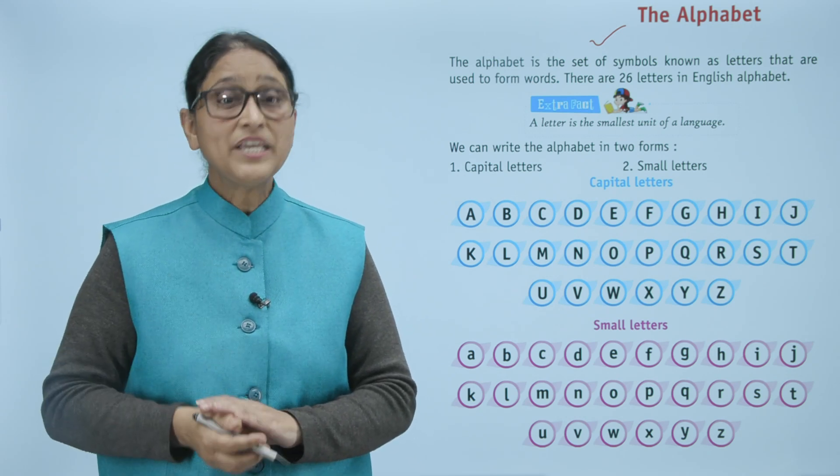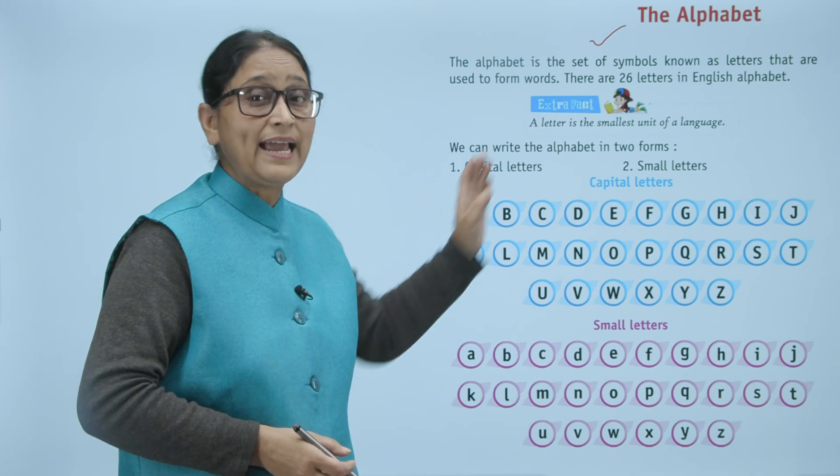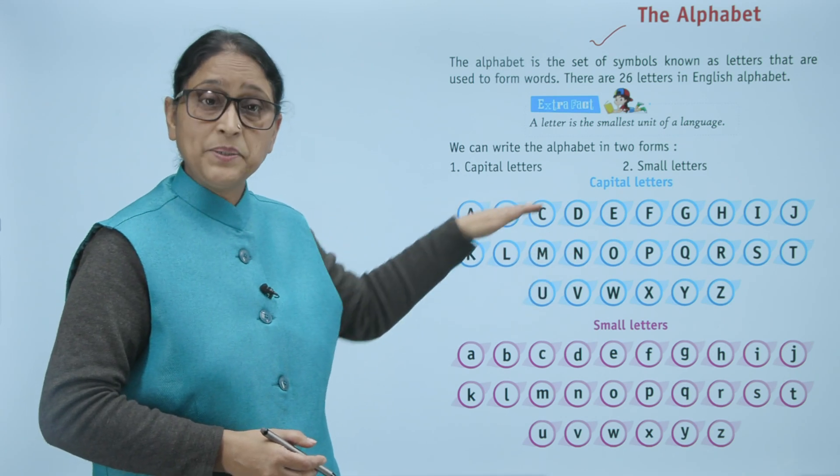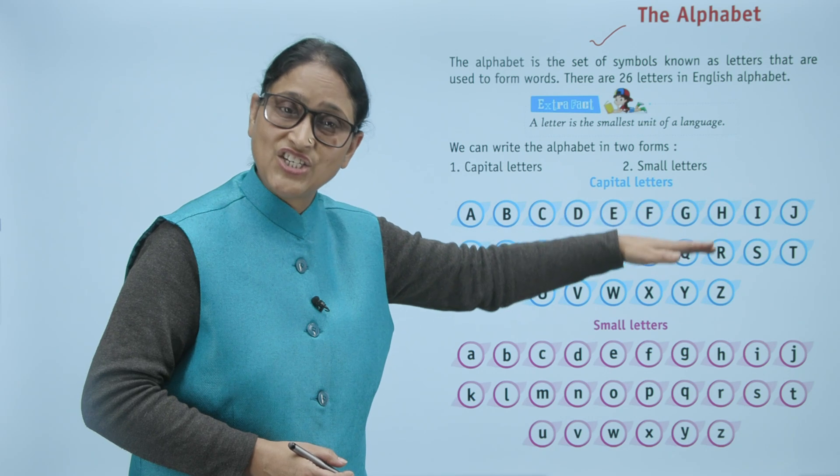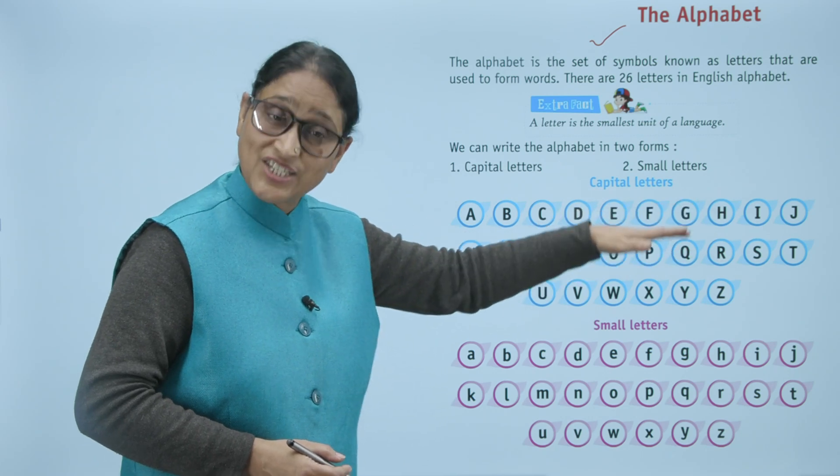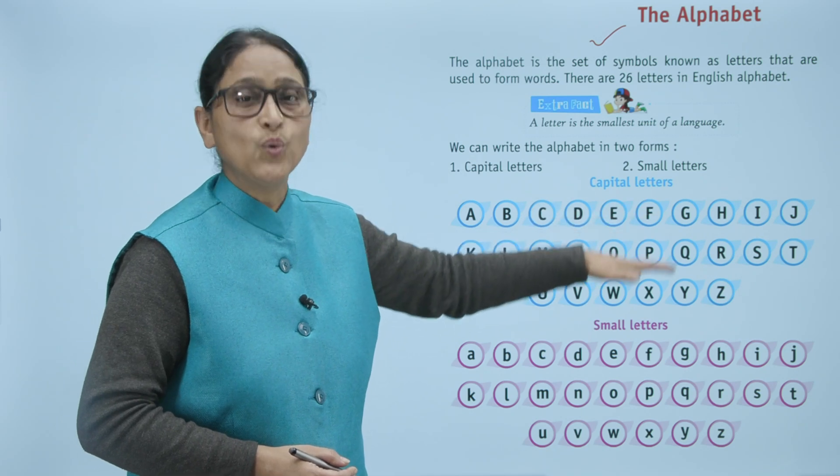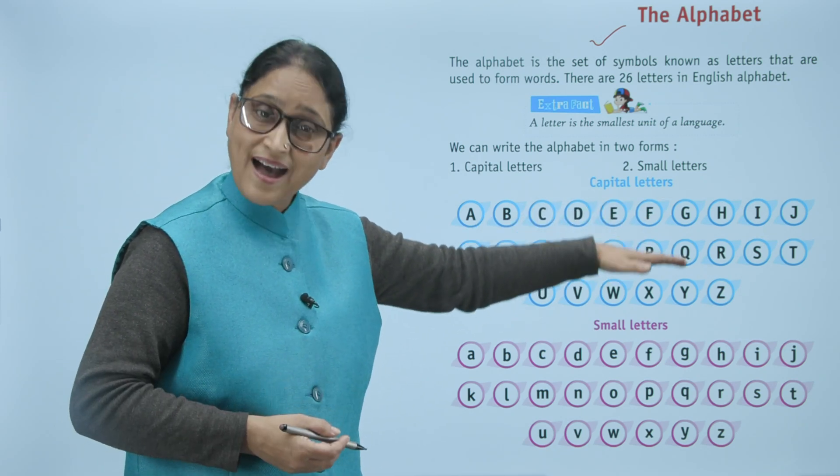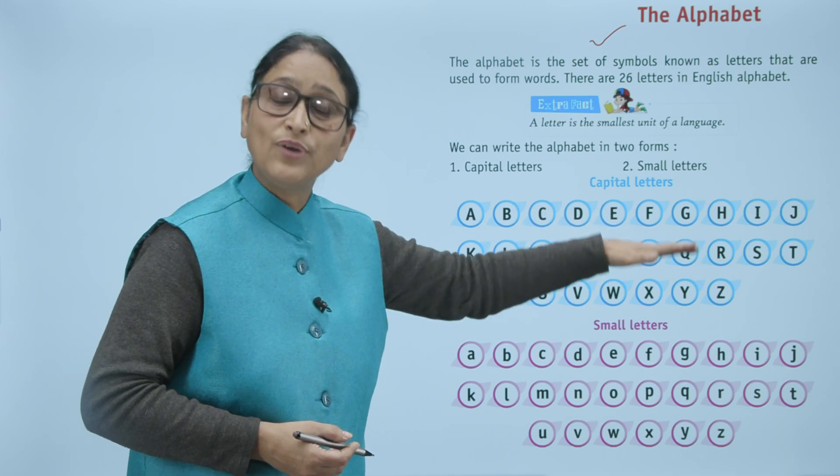We can write the alphabet in two forms: capital and small. Now capital letters: A, B, C, D, E, F, G, H, I, J, K, L, M, N, O, P, Q, R, S, T, U, V, W, X, Y, and Z.